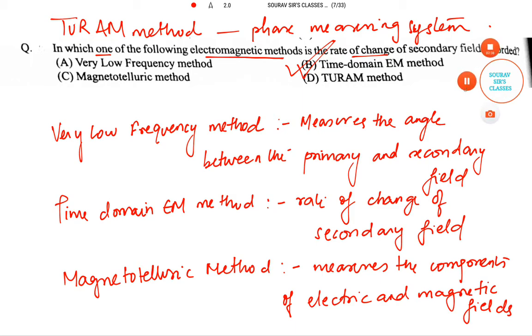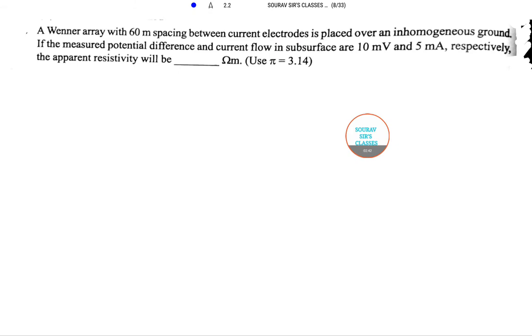Moving on to the next question. So the next question reads: a Wenner array with 60 meter spacing between current electrodes is placed over an inhomogeneous ground.